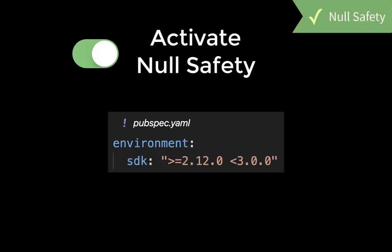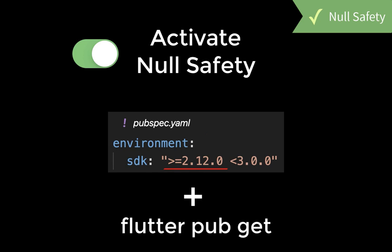To activate null safety, you need to go to your pubspec.yaml file and here you need to have at least Dart version 2.12 inside. After this, make sure that you run flutter pub get.